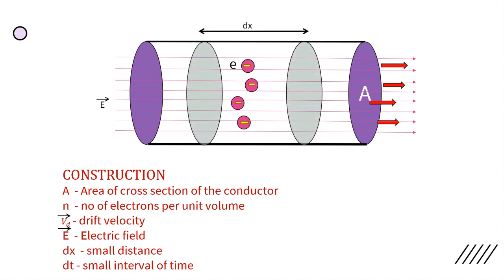Let us consider a small distance dx in the conductor. The distance dx could be written as Vd dt.